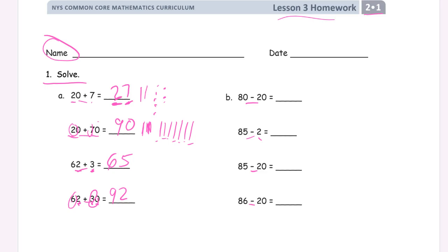You can just draw the quick tens and count if that's what works for you. But really just try to use the digits. If you practice it a little bit, it'll start making sense to you. You're really going to have to do it to be able to work with larger numbers. So 80 minus 20 — that's eight tens minus two tens. That's six tens. And six tens is 60.